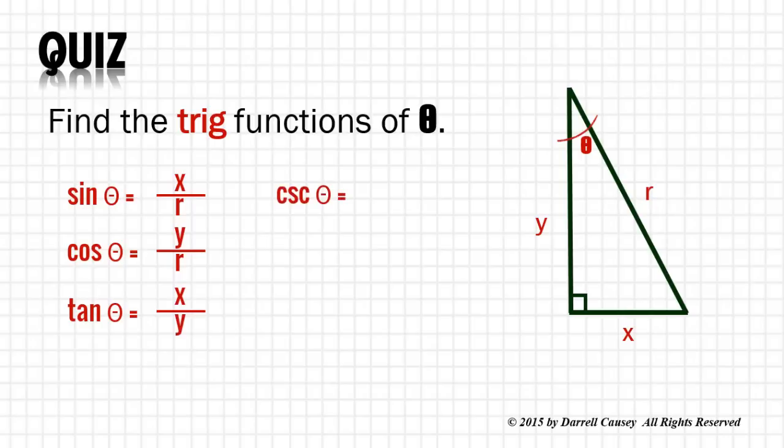Cosecant θ is r over x. Secant θ is r over y. And cotangent θ is y over x.